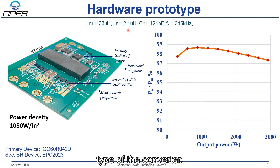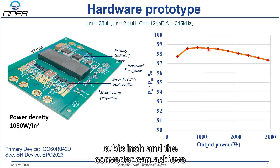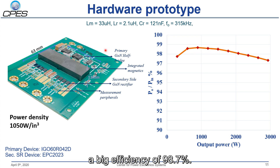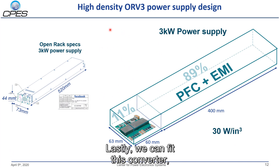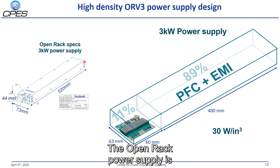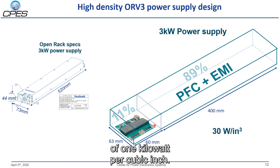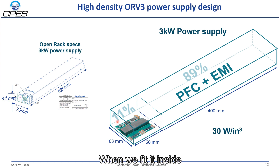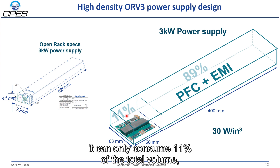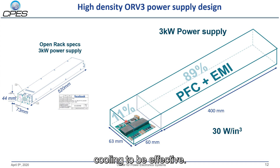Here we show the hardware prototype of the converter. We can achieve a power density of 1000 W per cubic inch and the converter achieves a peak efficiency of 98.7%. We can fit this converter within the recommended OpenRack power supply specs, which has a 520mm length by 73mm width and a 44mm profile form factor. The designed module at 1 kW per cubic inch consumes only 11% of the total power supply volume, and it comes with a very low profile that leaves a lot of space for effective cooling.